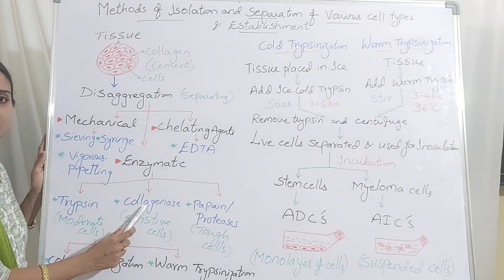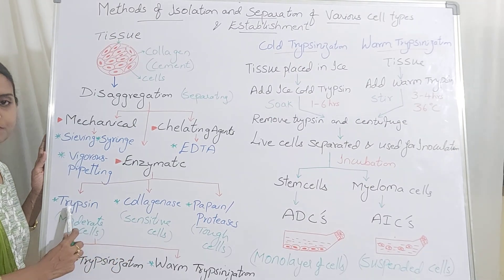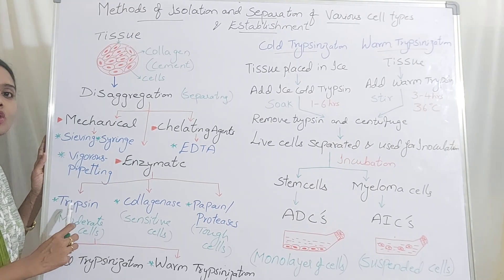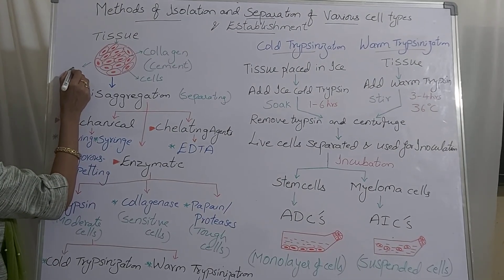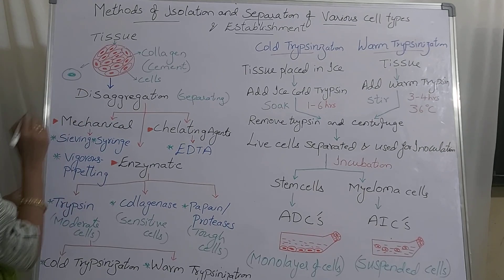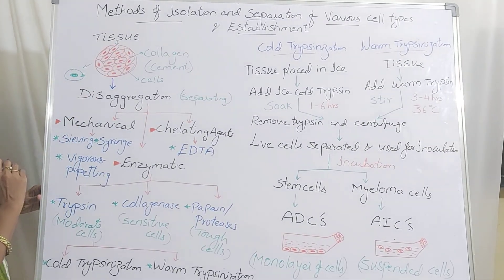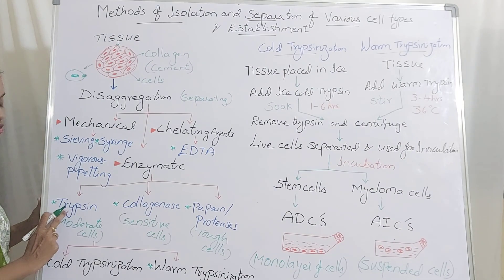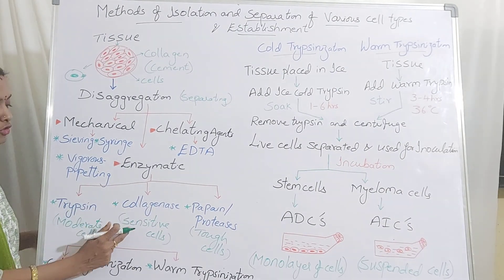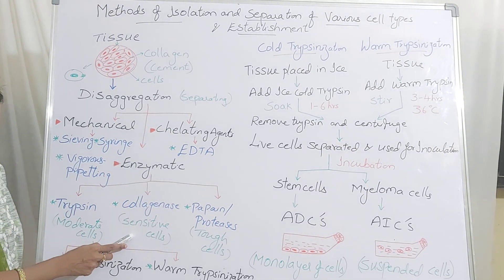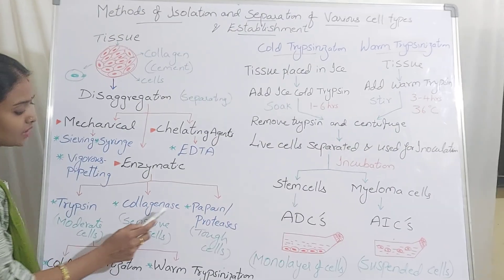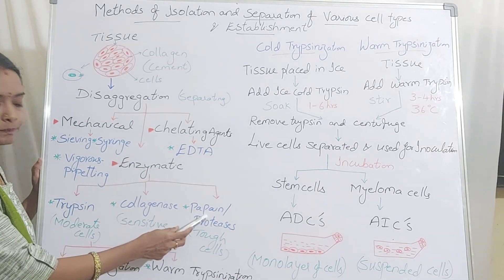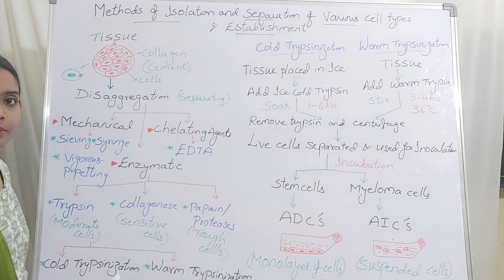Collagenase is used when the cells are sensitive to trypsin. After disaggregation you want isolated cells, but you must not rupture the cell wall — if trypsin is rupturing the cell wall, the cell is dead. In that case, instead of trypsin, you use collagenase, which acts very gently on sensitive cells. For tough cells, you can make use of other proteases or papain enzyme. Mostly in the lab, we make use of trypsin.